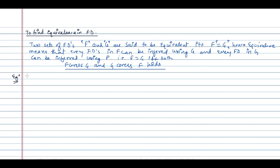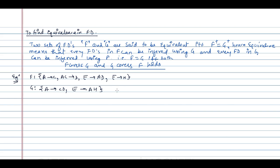Let us take this example. Assuming we have two sets of functional dependencies: the first set F is A→C, AC→D, E→AD, and E→H. The second set G is A→CD. Now they are asking whether these two functional dependency sets are equivalent or not.